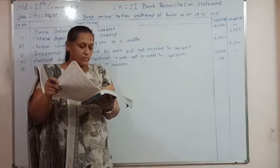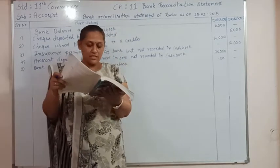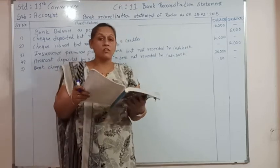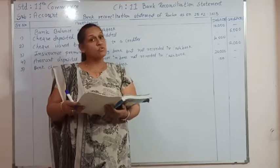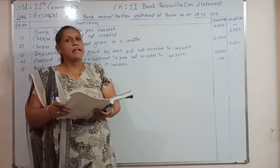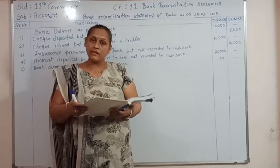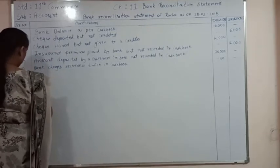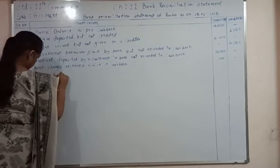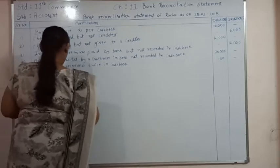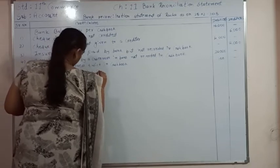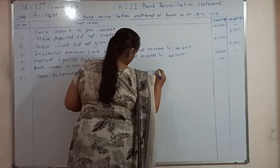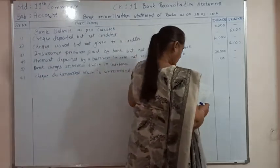Transaction number 6: a cheque of ₹6,000 deposited with bank on 27/2/15 is dishonored. The information was received by Rucha on 3/3/15. When the cheque is dishonored, bank debits our account, so we are supposed to credit the cash book — but Rucha was not aware of it and hasn't credited the cash book. So here we are going to credit it. Entry 6: cheque dishonored, unrecorded in cash book — ₹6,000, credited in BRS.